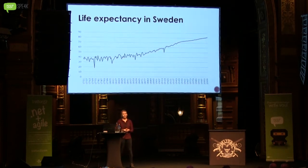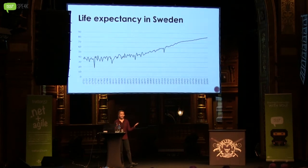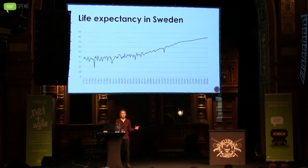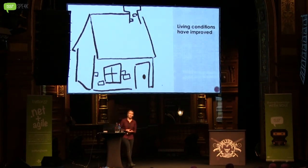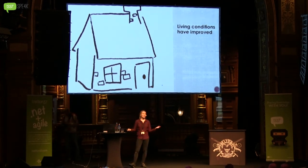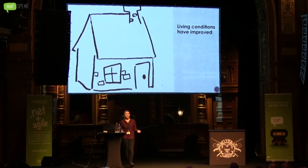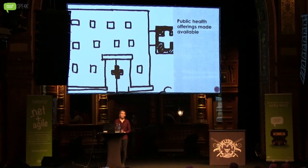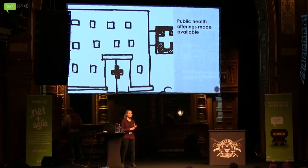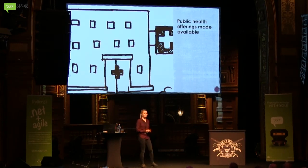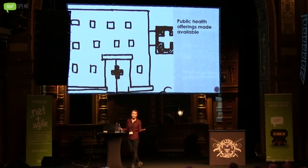But the question is why? Why is life expectancy for human beings increasing — and it's still increasing, over 80 years now. It's increasing because of our support systems: our living conditions have improved, most of us have proper housing that keeps us warm, with proper sanitation and access to clean water. We have public health offerings — think about medicine. You didn't have antibiotics 250 years ago, but you do now. You have vaccination programs, a focus on nutrition, and free health care, because in Scandinavia health care is free for everyone.